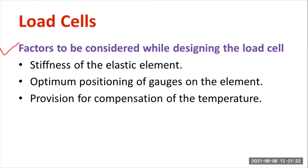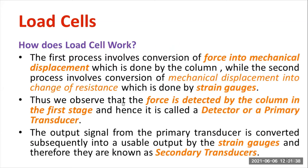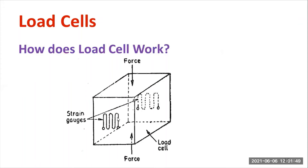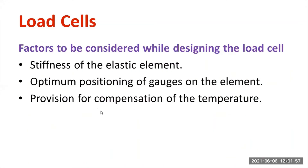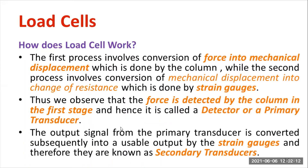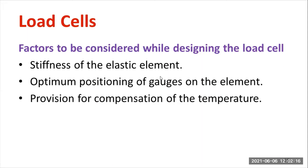Let us understand the major factors to be considered while designing a load cell. First, you have to calculate the stiffness of the elastic element — the rectangular column — that is very important. Next, the optimum positioning of the gauges on the element matters a lot. Then, provision of temperature compensation is required because the strain gauge depends on room temperature — without compensation you can get wrong readings. These are the three important factors to consider while designing a load cell.